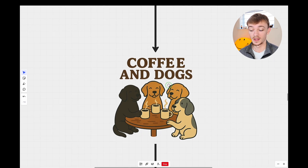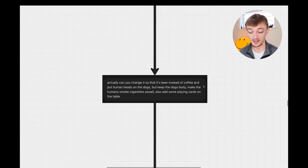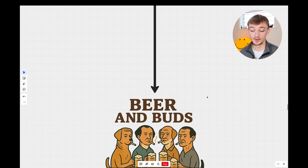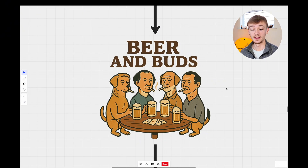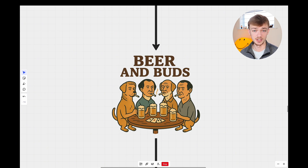I went one step further and said: change it so it is beer instead of coffee, put human heads on the dogs but keep the dog's body, make them smoke cigarettes, and add some playing cards onto the table. This is what it generated — four half-human half-dog characters drinking beer, smoking cigarettes, with the text 'Beer and Buds' and playing cards on the table, just like I asked. I was just seeing how accurate ChatGPT is at changing images based on conversation.